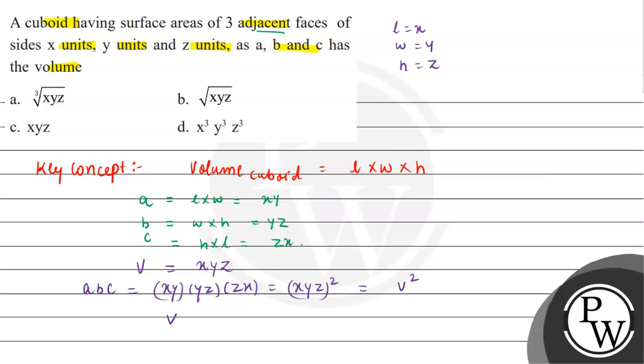So here we can say volume of cuboid will be equal to the square root of A, B, C.